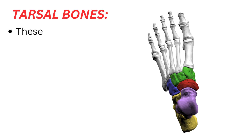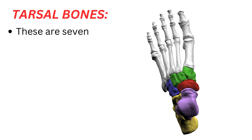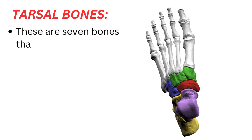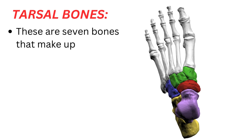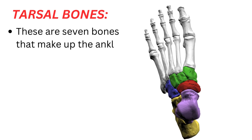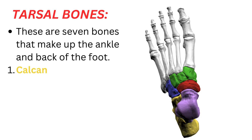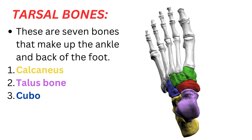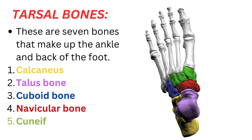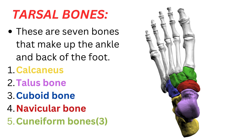Tarsal bones. These are seven bones that make up the ankle and back of the foot: the calcaneus, talus bone, cuboid bone, navicular bone, and three cuneiform bones.